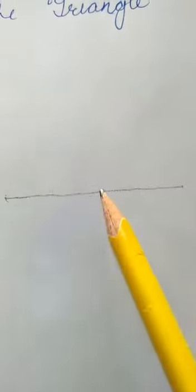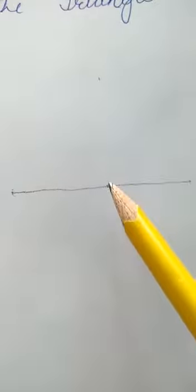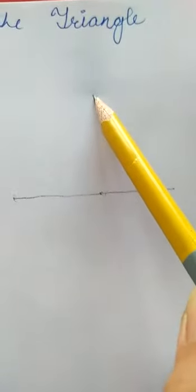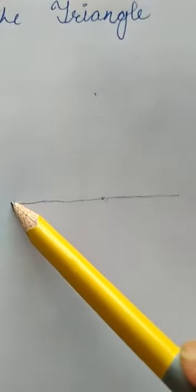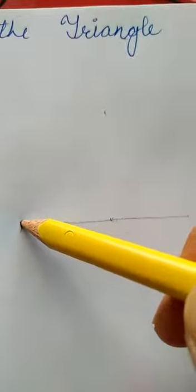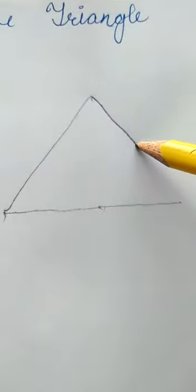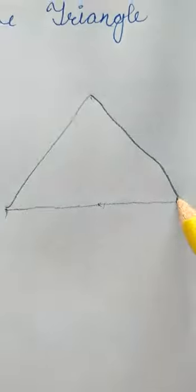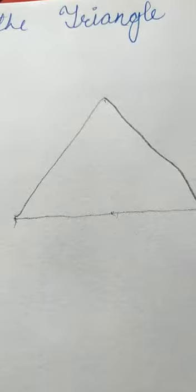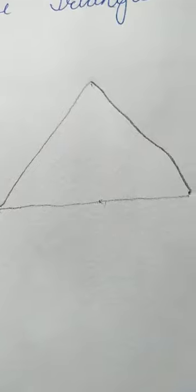And assume that this is the middle line, so a point I have made here. Then I will join this point to this point and this point to this point. We will not use any scale because in your class you can't use any stencil, just freehand.